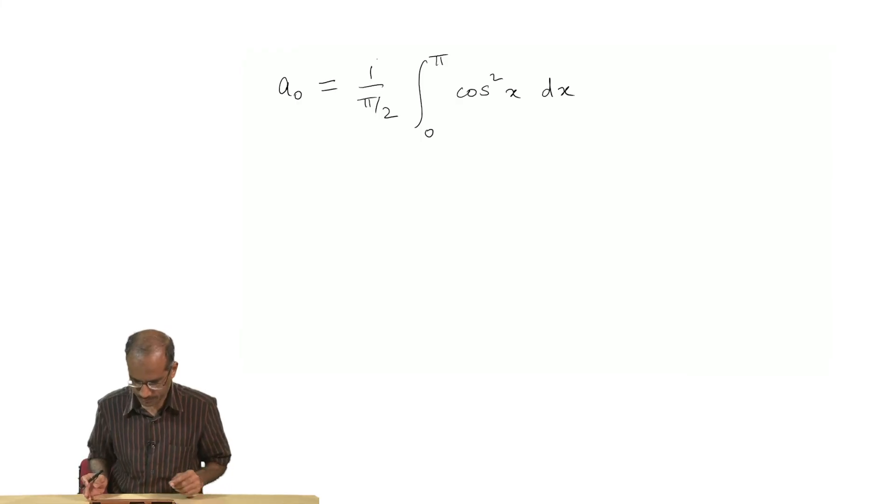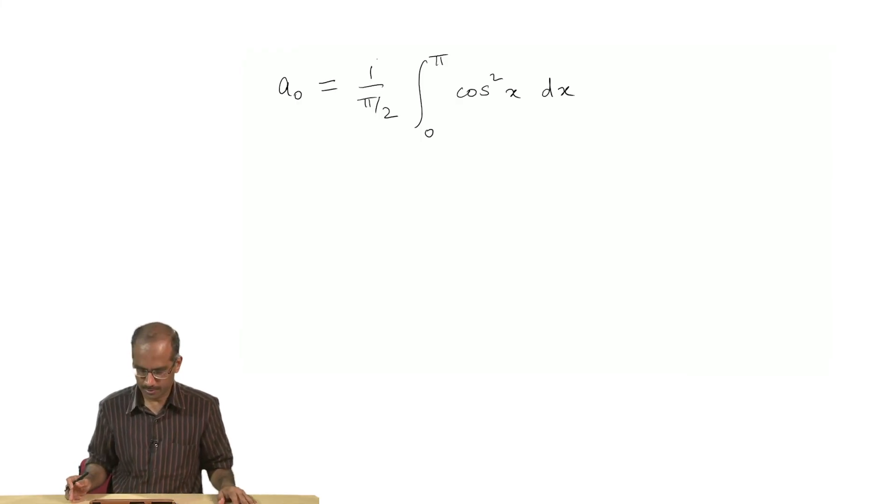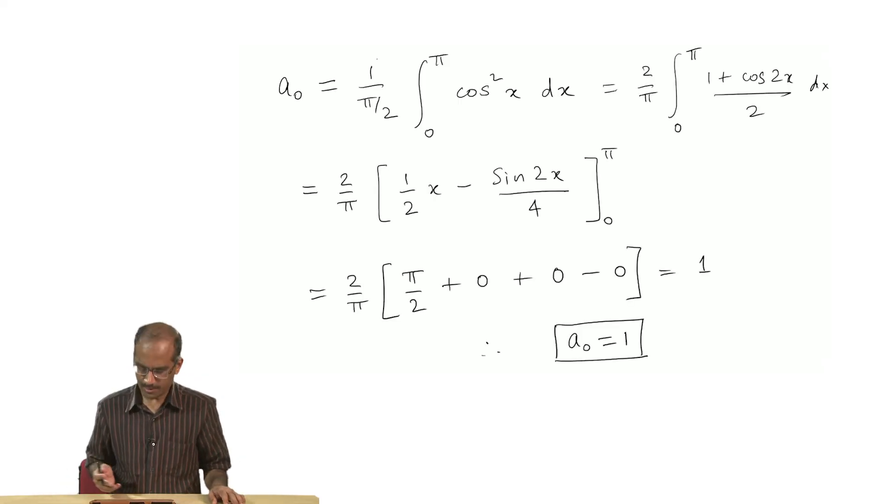With this, let us calculate only the average value of the function and a_n. Here I have written the standard formula for a₀, the average value of the function. I have put in the limits of the integral and it turns out that a₀ is 1.